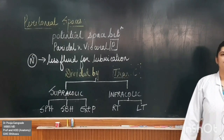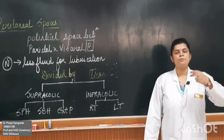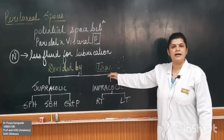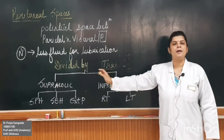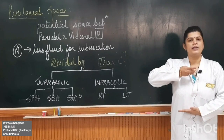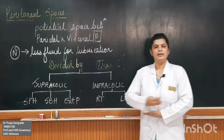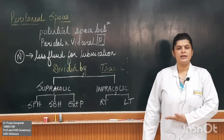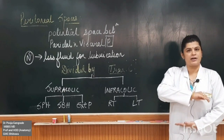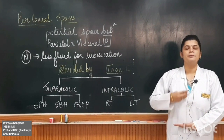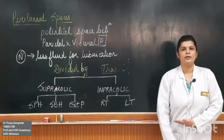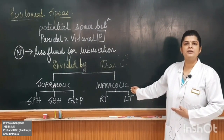The peritoneal spaces, for our understanding, have been divided into two parts. This division is made by the transverse colon. The transverse colon acts as a guide to divide the peritoneal space into two compartments. The part above the transverse colon, between the diaphragm and the transverse colon, is called the supra-colic compartment.